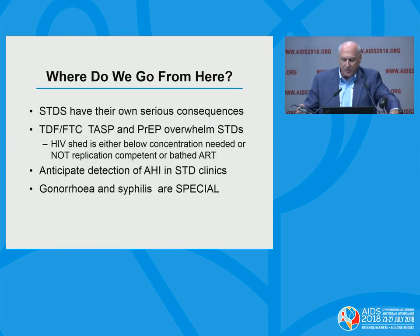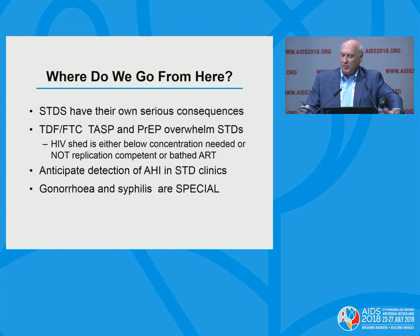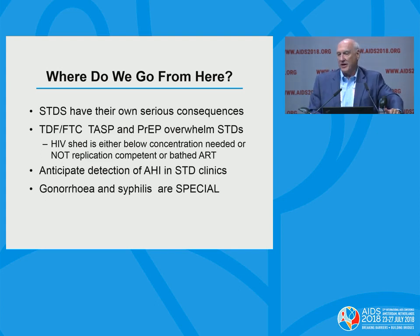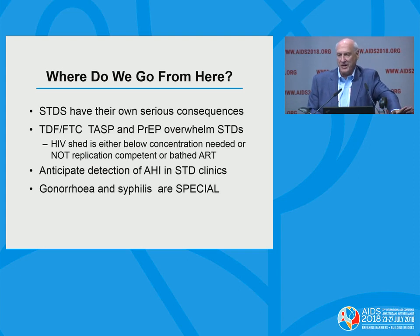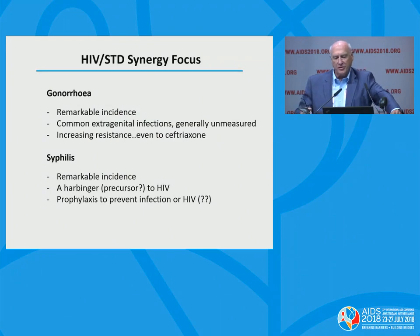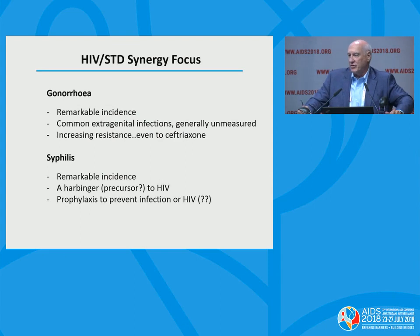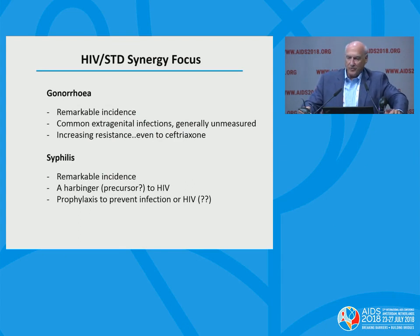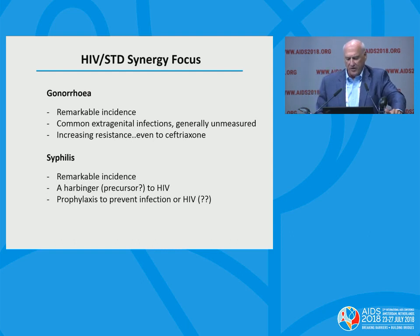Where do we go from here? STDs have their own serious consequences — it's not acceptable to leave them alone because the consequences in reproductive health are grave for both men and women. TASP and PrEP overwhelm the classical STDs, which is wonderful but with the consequences I've mentioned. We anticipate detection of acute infection in STD clinics, and one must be aware of the signs and symptoms. Gonorrhea and syphilis are special: we see remarkable incidence, extragenital infections at a rate not seen 20 years ago, and increasing resistance even to ceftriaxone. Both are clearly a harbinger to HIV, and prophylaxis to prevent infection is a topic we'll discuss. Thank you.